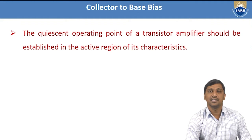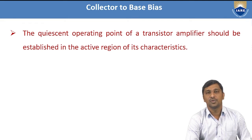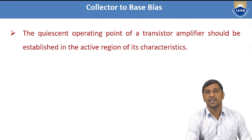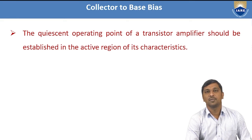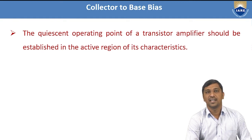Whenever the Q-point shifts towards saturation or cutoff, it loses the amplification process and some portion of the input signal is lost. Hence, to produce faithful amplification using a bipolar junction transistor, we must always maintain the proper Q-point or operating point in the active region. That is why we need to bias the amplifier circuit using biasing resistances and biasing sources.